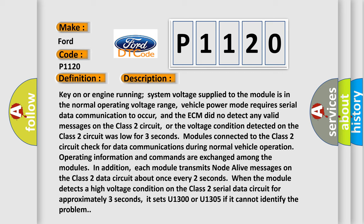Modules connected to the class 2 circuit check for data communications during normal vehicle operation. Operating information and commands are exchanged among the modules. In addition, each module transmits NODA live messages on the class 2 data circuit about once every 2 seconds. When the module detects a high voltage condition on the class 2 serial data circuit for approximately 3 seconds, it sets U1300 or U1305 if it cannot identify the problem.